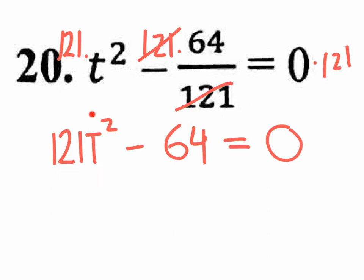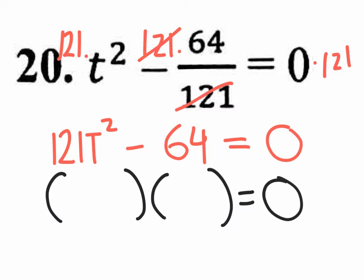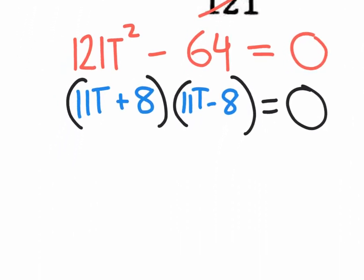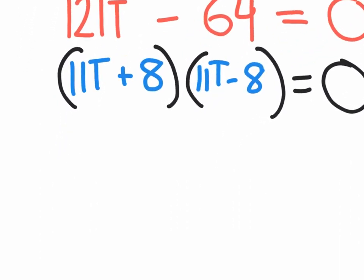You could do the square root of 121T squared and the square root of 64. Let's jump to our factored form. The square root of 121T squared is 11T, and the square root of 64 is 8. One is plus, one is minus, giving (11T + 8)(11T - 8) = 0. Applying the zero product property: 11T plus 8 equals 0, and 11T minus 8 equals 0.